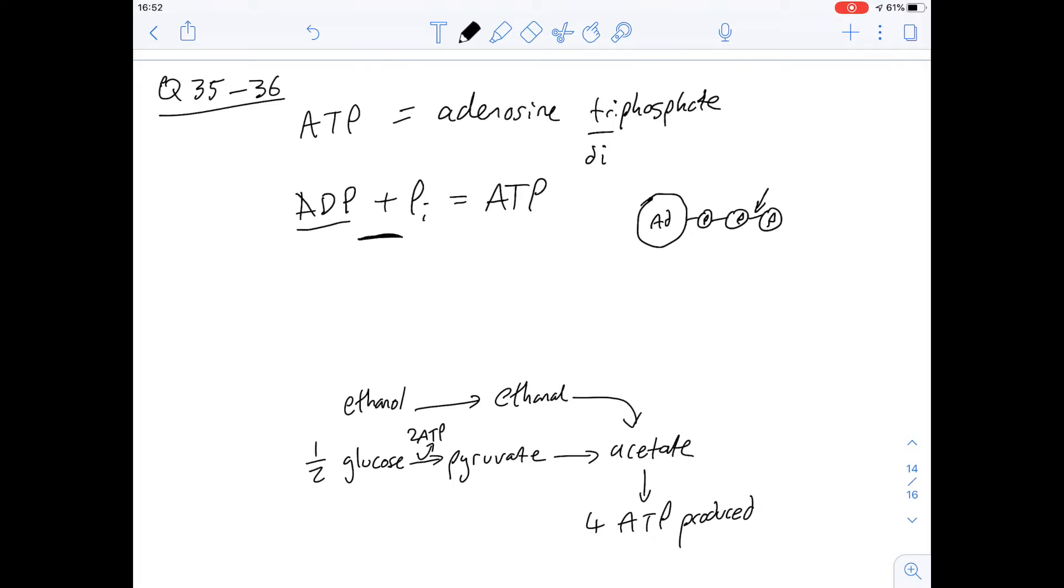So ADP isn't made out of glucose, oxaloacetate or NADH. It's something that already exists within the cell.